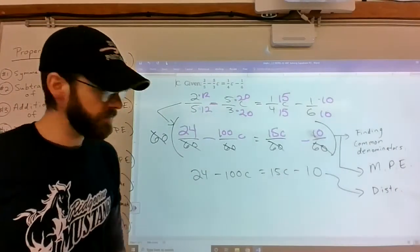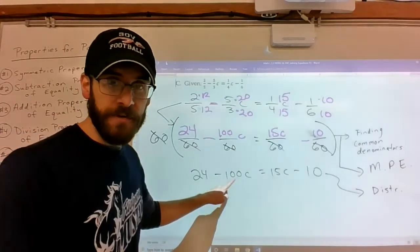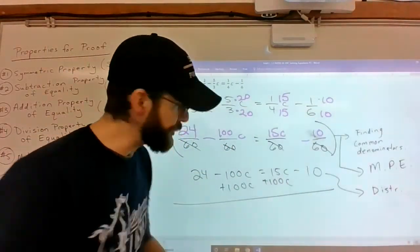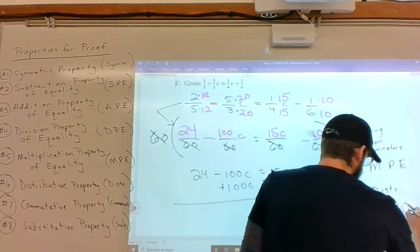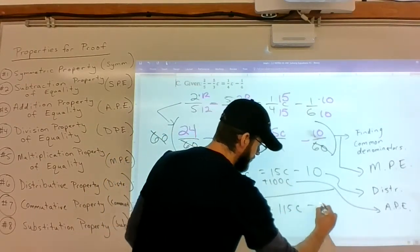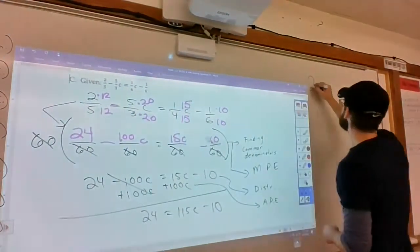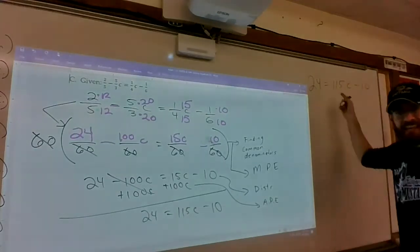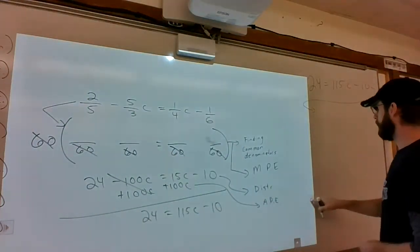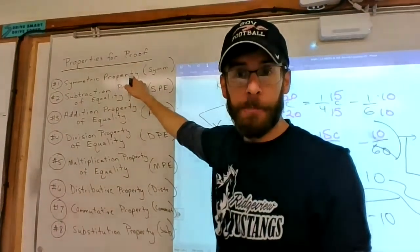And now it looks like the first problem on these notes. So I'm going to get the C's on the same side. I think it's easier to add the 100C and move it to the right. So I'm going to do that, which you're allowed to do using the addition property of equality. So that's gone. 24 on the left, 115C on the right, minus 10. And here's what I'm going to do. I'm going to take that example and rewrite it with the C on the left. 115C minus 10 equals 24. That's the symmetric property. The symmetric property allows us to flip it around like that.